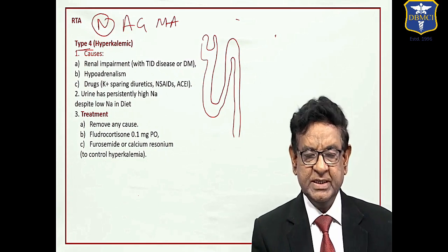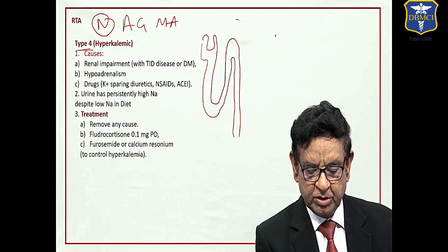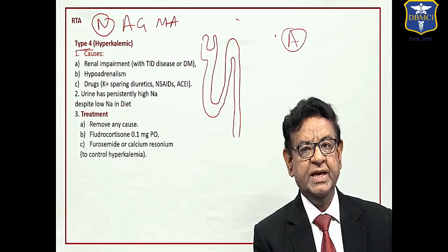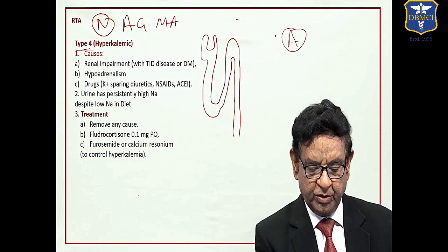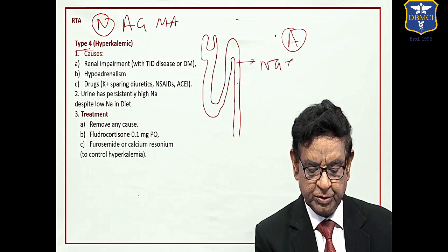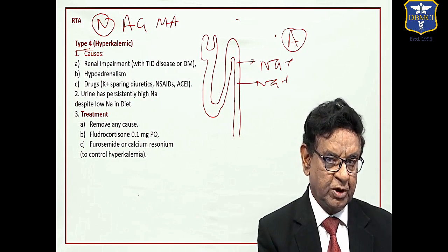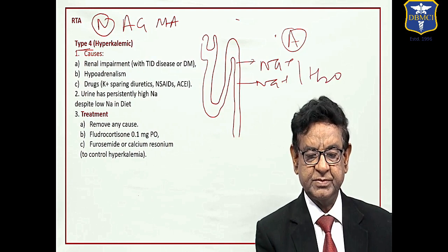First of all we talk about type IV RTA. Let us see what is the basic pathophysiology of this condition. Normally aldosterone comes and acts on the DCT and collecting tubule. It absorbs two sodium, absorbed actively, water follows passively.